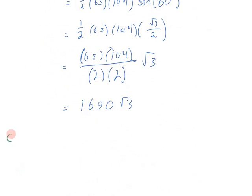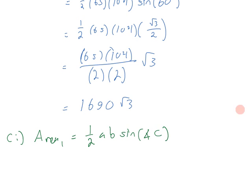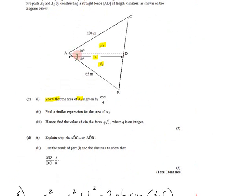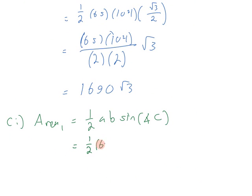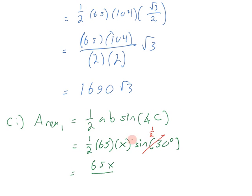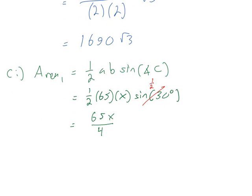For Part C part 1, we find the area of triangle 1 starting with the general area formula: one half AB sine of angle C. We only know one angle in this triangle — the 30 degree angle — so the two adjacent sides are 65 meters and X meters. Area 1 equals one half times 65 times X times the sine of 30 degrees. Since the sine of 30 degrees is one half, we get 65X divided by 4.